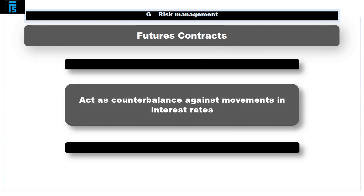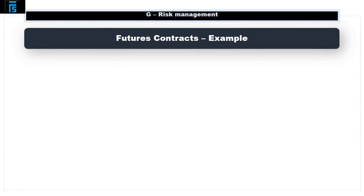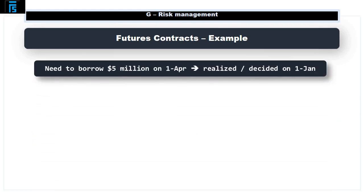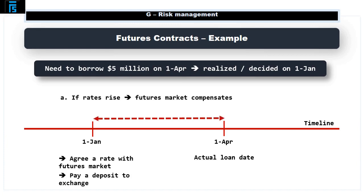FRA contracts can also be used to act as a counterbalance against movements in interest rates, working on a similar principle to foreign currency risk management. Following from our earlier example, a rate is agreed with the futures market when it's forecast that we'll need to borrow in the future. So if on the 1st of January we realise we'll need to borrow $5 million on the 1st of April, we can agree a rate for that loan on the 1st of January with the futures market. At that point we'll need to pay a deposit to the exchange. If by the 1st of April rates have risen, the futures market will compensate us; if the rate drops, we'll need to make a payment to the futures market.